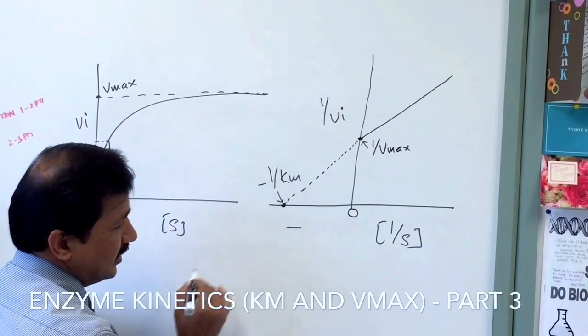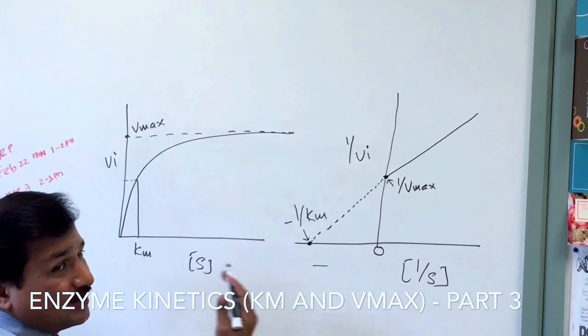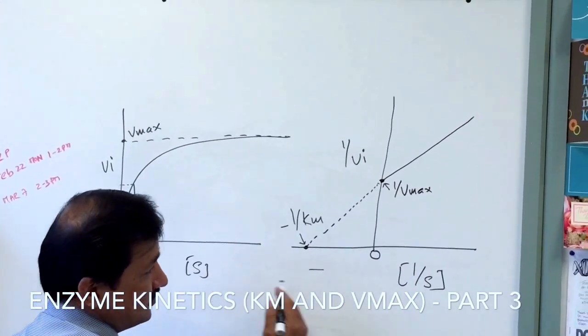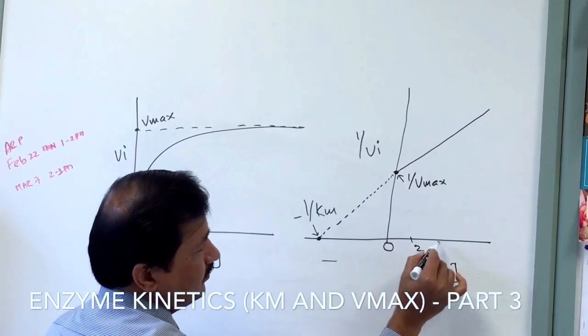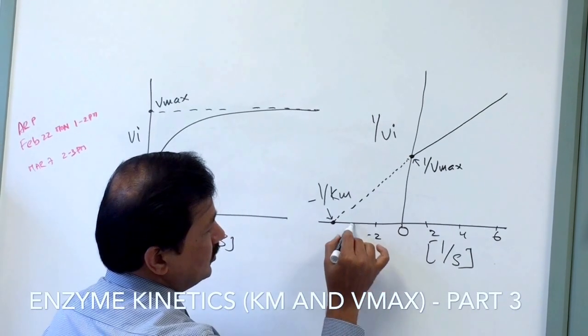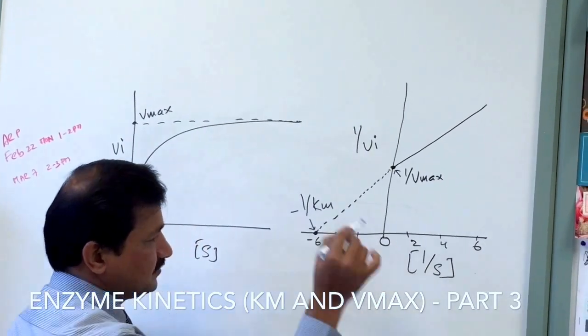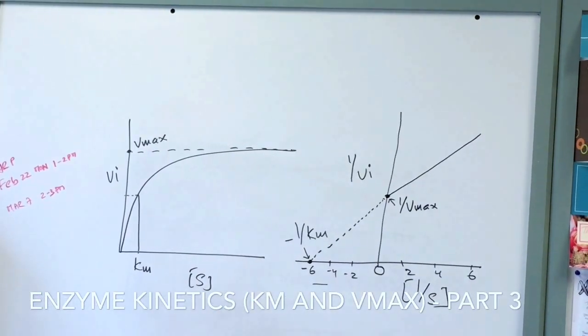All these numbers are written with a minus sign just to indicate that they are on the left side of zero, the other side of zero. This will be written in whole numbers. Say this is 2, 4, 6, this will be minus 2, minus 4, and minus 6. Minus indicates that they are on the other side of zero.